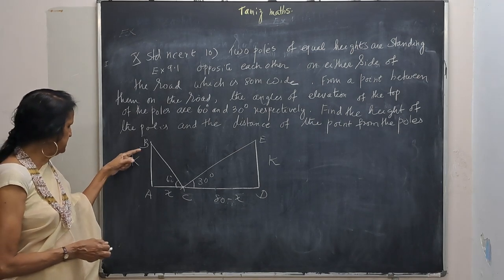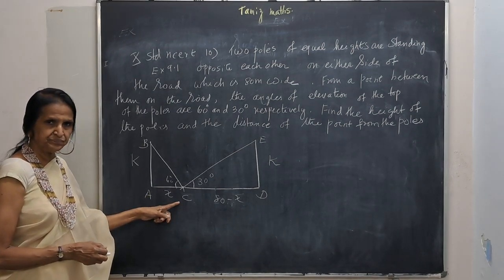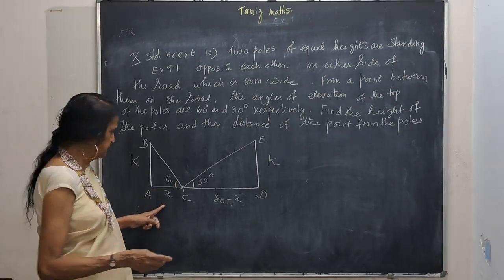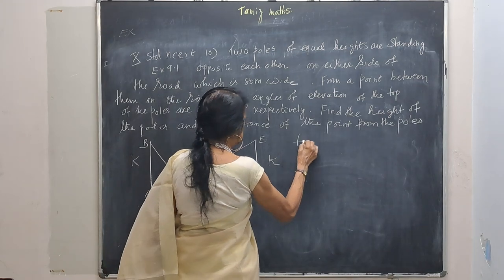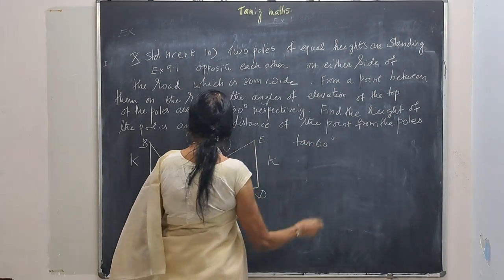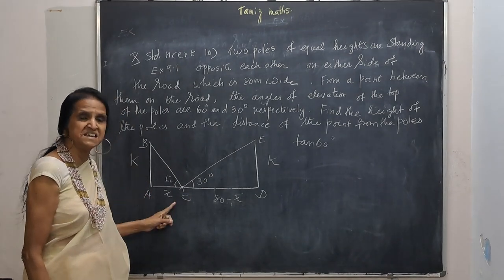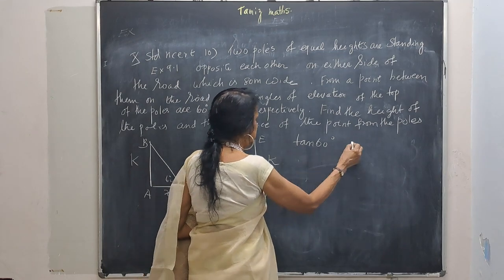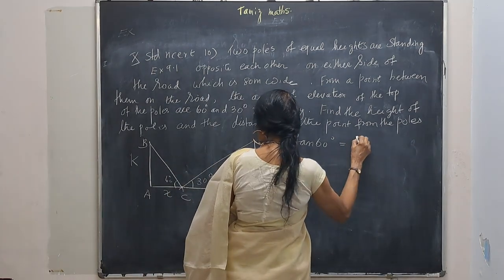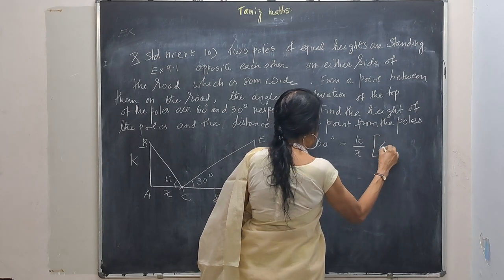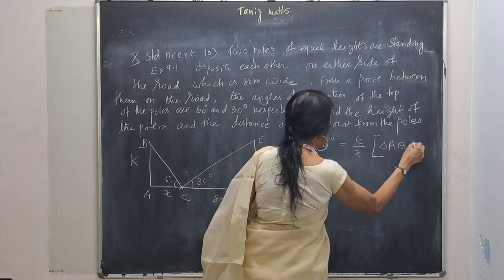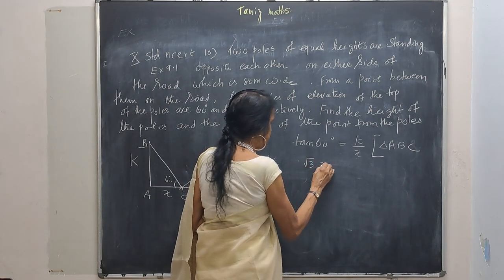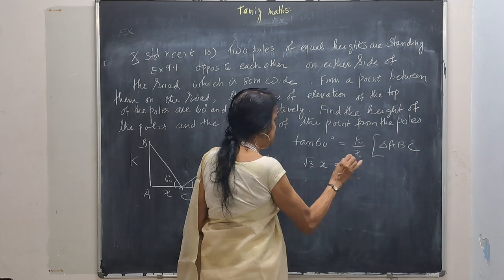Consider triangle ABC. Tan 60 is opposite by adjacent. Tan 60 from triangle ABC, tan 60 is K by X. Tan 60 is root 3. So root 3 into X is equal to K. So let that be there.